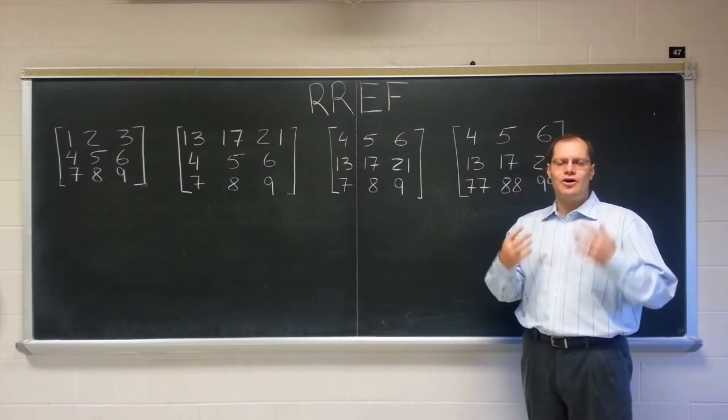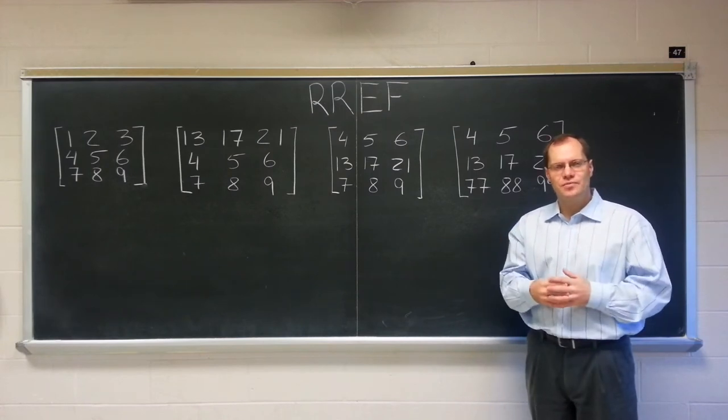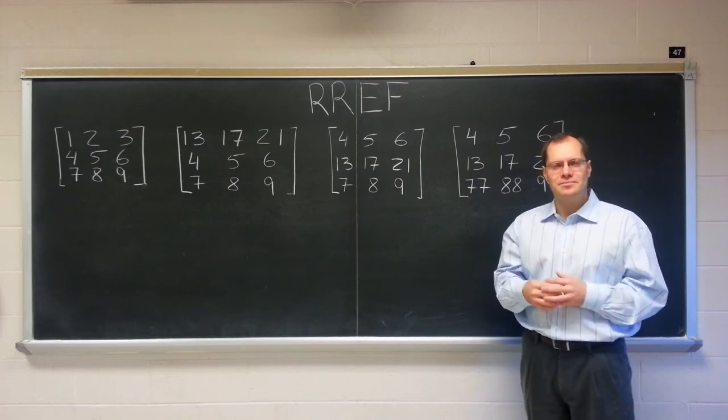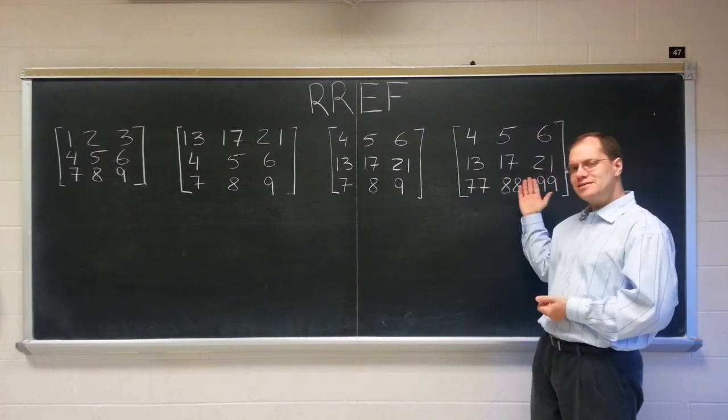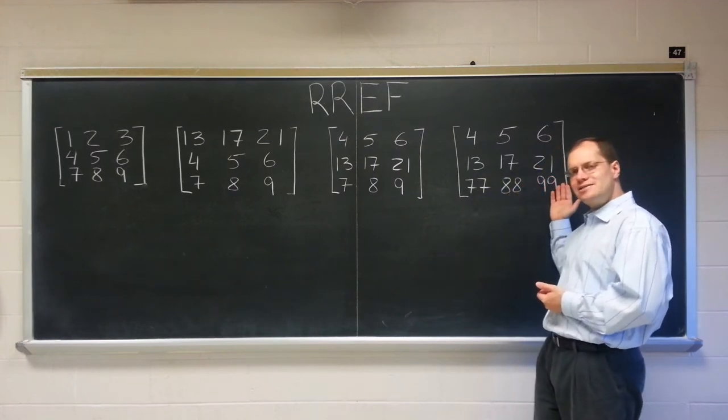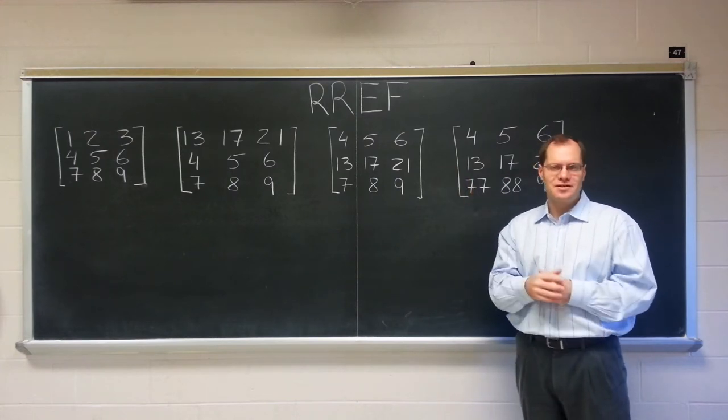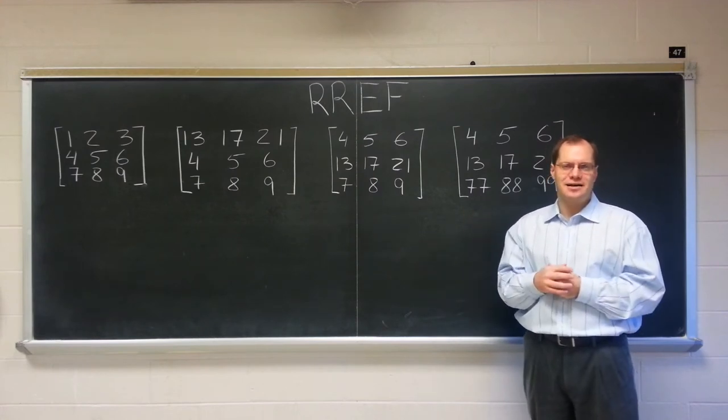The conclusion is that all of the operations of Gaussian elimination preserve the relationships among the columns. And in the context of a linear system, if you bring the right-hand side along for the ride, then the relationship between the right-hand side and the columns of the matrix is preserved by Gaussian elimination, if you do it consistently for the columns and the right-hand side.